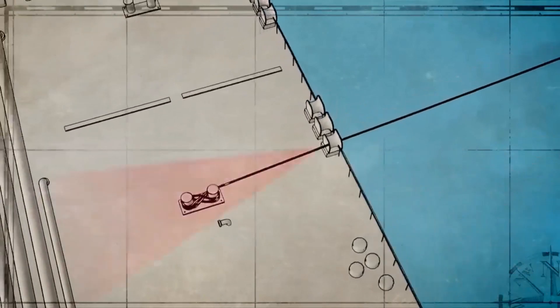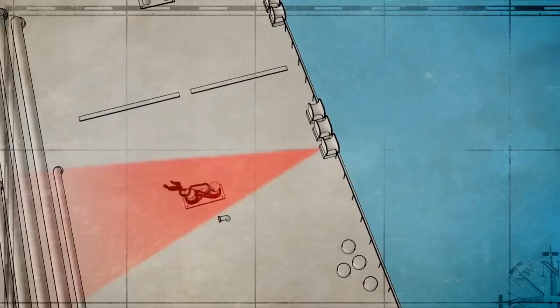Always avoid the snapback zone, the likely path of a parted line. A best practice is to paint the snapback zones on the deck plating as a reminder.